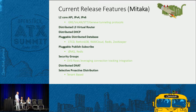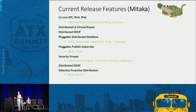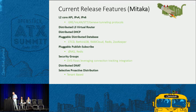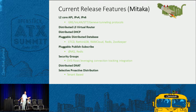Some of the features we have done for Mitaka: we have layer two implemented with all the common tunneling protocols. We have distributed layer three done only on OVS flow, so no agents, no namespaces. We have a distributed DHCP application. The pluggable databases and the pluggable pub-sub mechanism. We already have a nice integration with OVS connection tracking support for security groups, so we removed the need to use the Linux bridge. And we have distributed NAT — if your compute node has a NIC to the external public network, you can do DNAT traffic without traversing the network node.